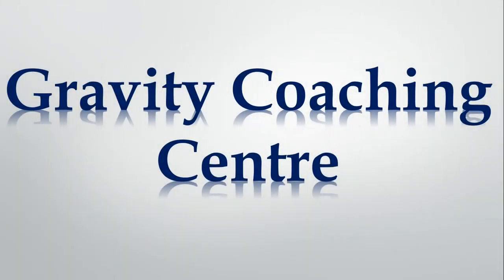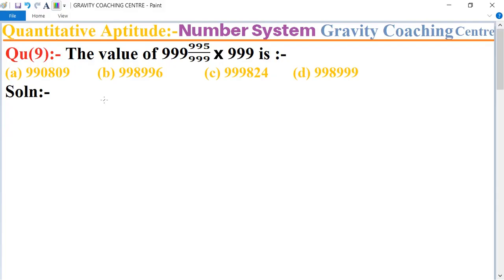Welcome to our channel Gravity Coaching Center. Quantitative Aptitude, Chapter Number System, Question Number 9. The value of 999 × 995/999 × 999 is - so first we write 999.